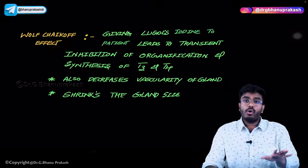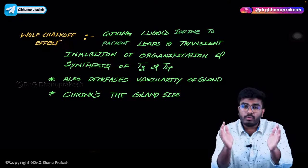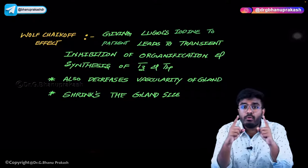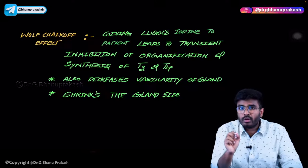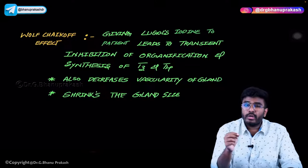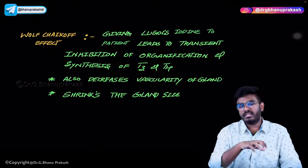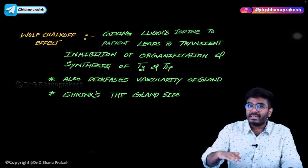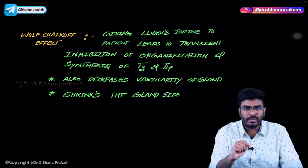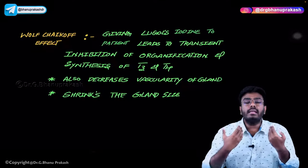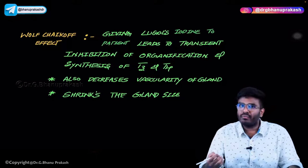Before surgery, we need to decrease the size of the thyroid gland, decrease its vascularity, and decrease T3/T4 production. So one month before surgery, we start the patient on Lugol's iodine given weekly. Lugol's iodine decreases T3/T4 production by the Wolff-Chaikoff effect, decreases gland size, and decreases vascularity. Decreased vascularity means decreased hemorrhage during surgery. That is the Wolff-Chaikoff effect.